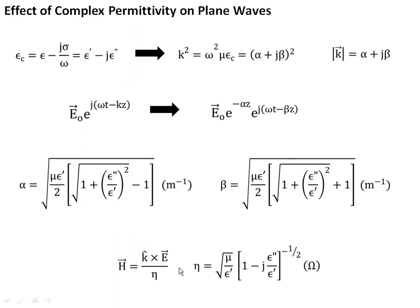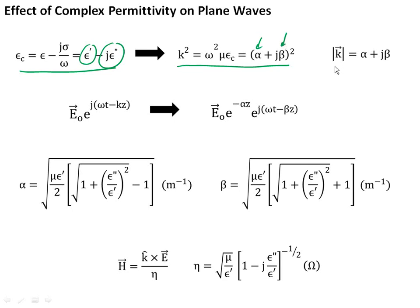How does complex permittivity modify our plane wave equation? With complex permittivity, we modify our expression for K by including a complex term. We write K as a real part called beta and an imaginary part called alpha, giving our overall expression for K. This changes our plane wave expression for a wave traveling in the z direction: instead of just a vector times a phase term, we now have that same vector and phase term using beta, plus a new term e to the minus alpha z.